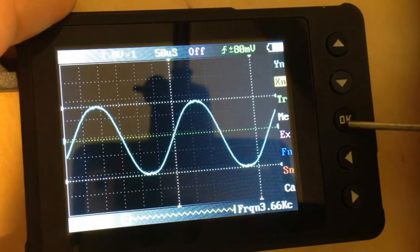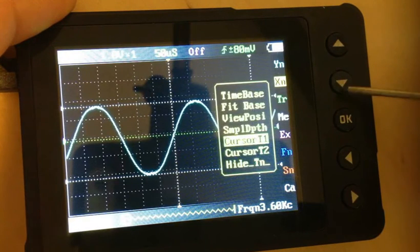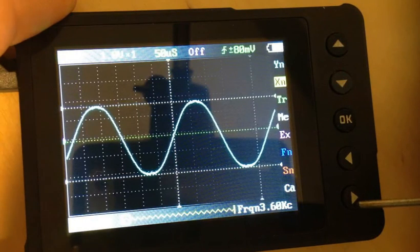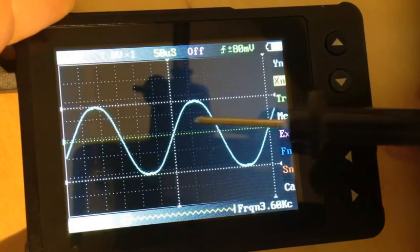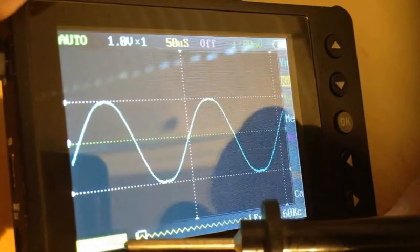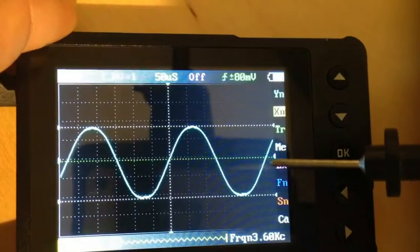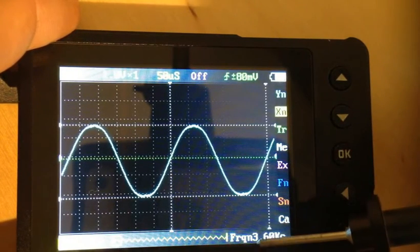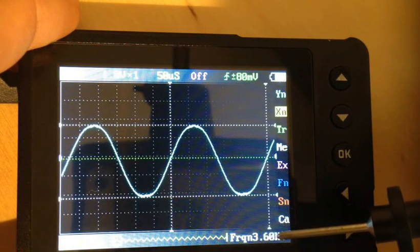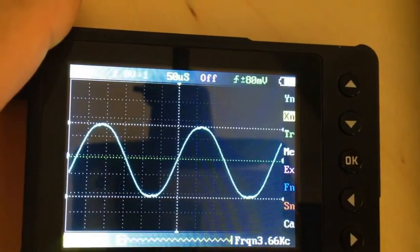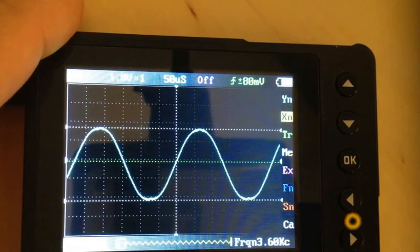And we'll go to cursor T2, and we're going to move it until it's one cycle. So from that cursor to that cursor, we can now see 278 microseconds. A fellow could invert this and get the frequency, but conveniently the frequency is already displayed here: 3.60 kilohertz. There you go. That's how you use the cursors to make simple measurements.